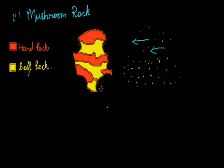Sometimes it also happens that the ground or the surface on which the rock is standing gets so much eroded that the thin layer cannot hold the heavy top part. So it falls apart, the whole stone comes down to the ground, and then the erosion work starts on that also. This is how the mushroom rock is formed.